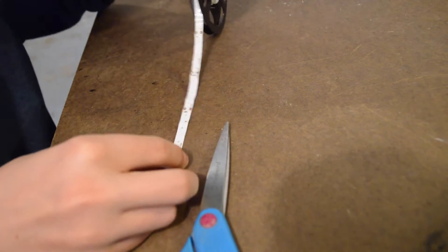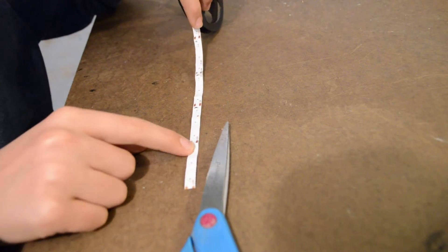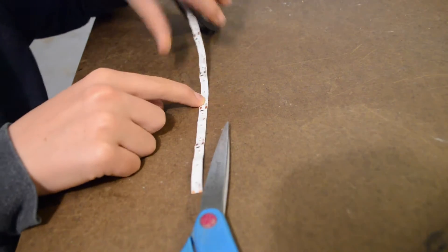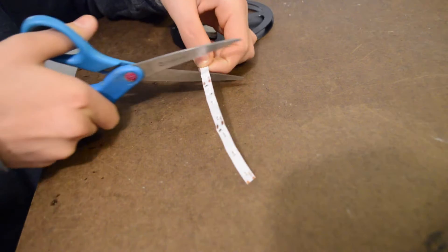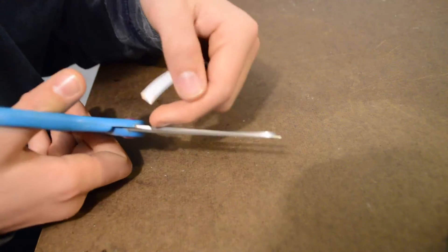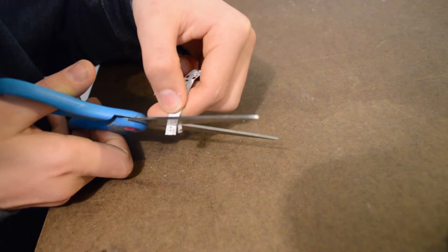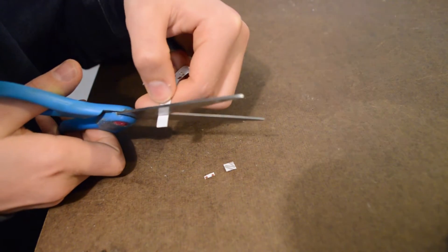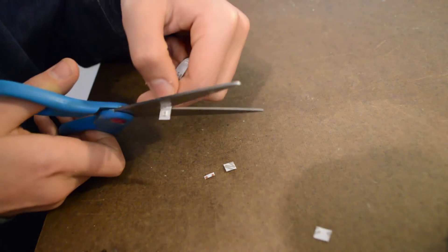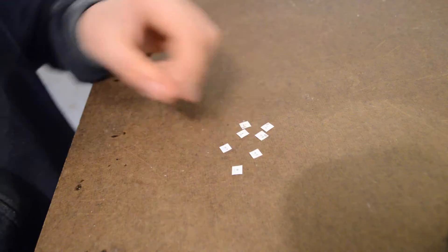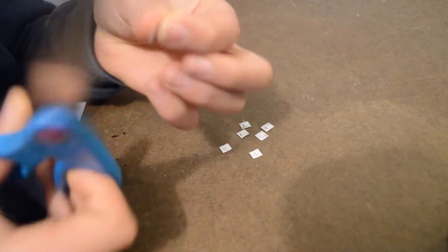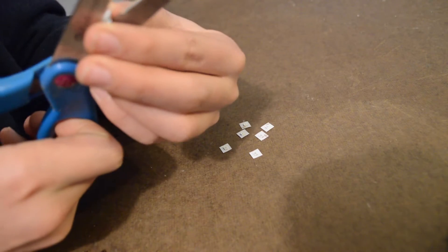First you'll want to cut 7 LEDs off the LED strip. Now you'll want to cut the LEDs off the strip leaving about 2 millimeters on either side. Now trim the sides flush to the edge of the LED.